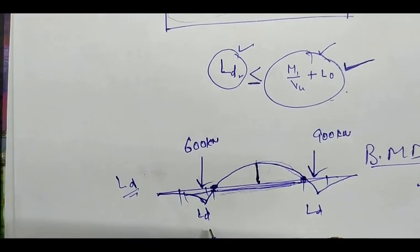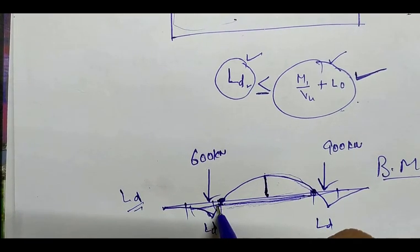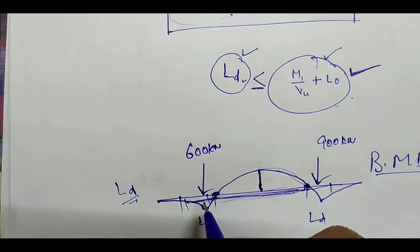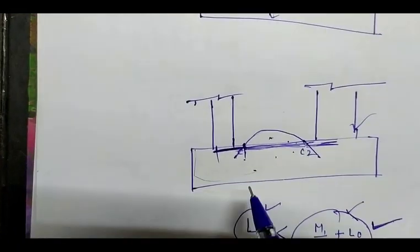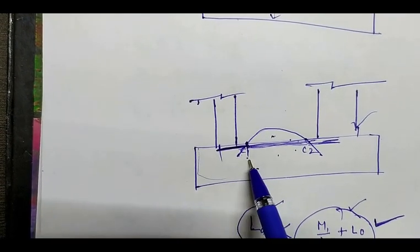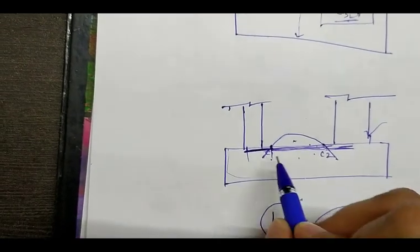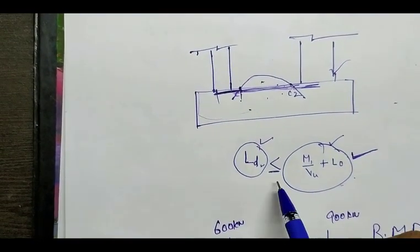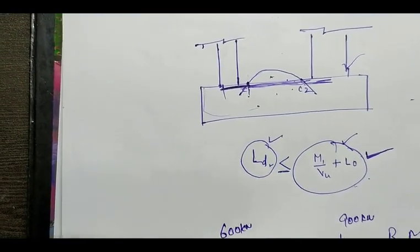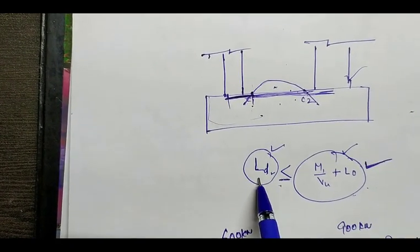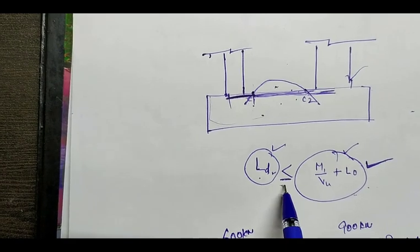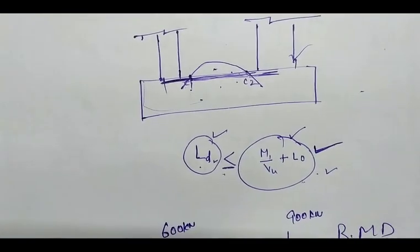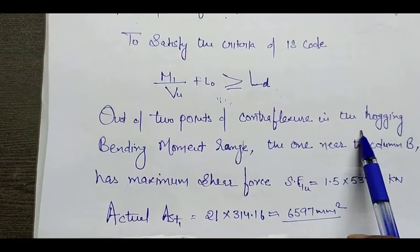The extended length of steel beyond the point of contraflexure should be equal to LD (development length). We extend this steel because at the point of contraflexure, due to maximum shear force, there are chances of developing cracks in the footing. To eliminate those cracks, we provide steel to bear the shear force, and the length must be at least equal to the development length.